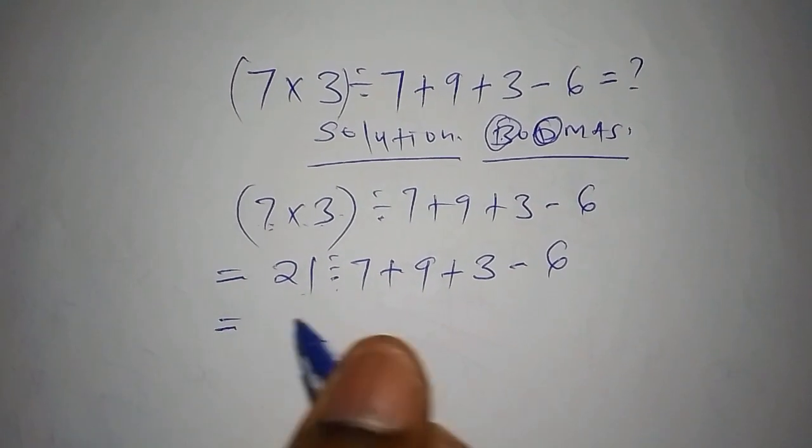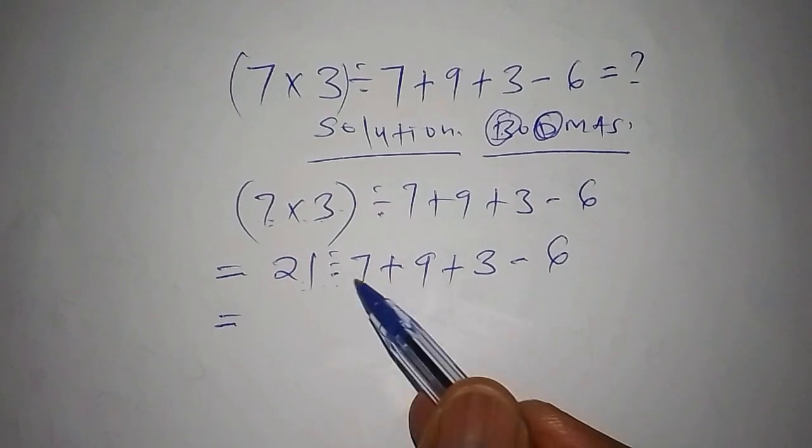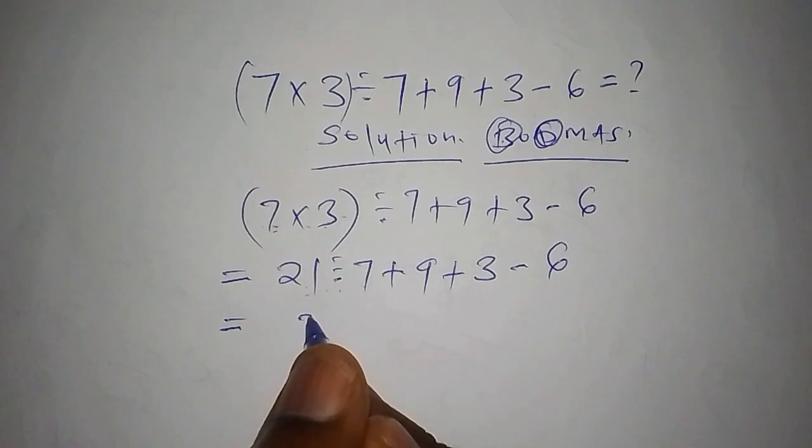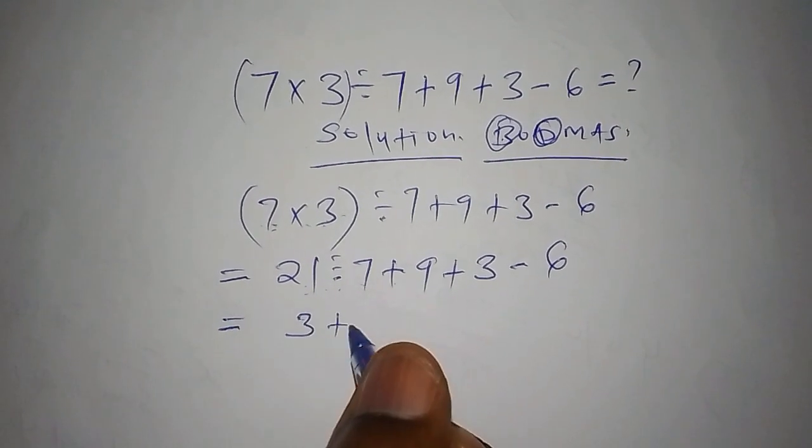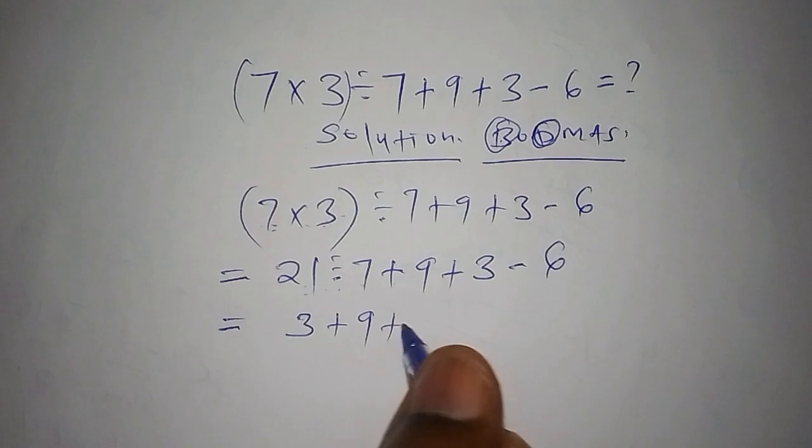So here we are going to have 21 divided by 7, that is 3, add to 9, add to 3 again, subtract from 6.